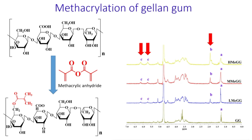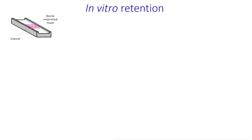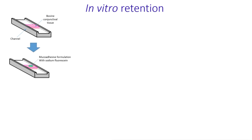In vitro retention experiments were done using freshly excised bovine conjunctival tissue that was placed into a flow channel in an incubator. Each mucoadhesive polymer formulation was prepared with sodium fluorescein and placed onto the conjunctival mucosa. These were then washed with artificial tear fluid to mimic the tear flow.